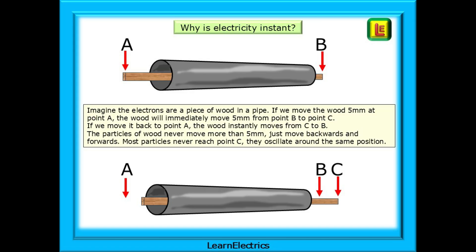How fast is electricity? Why do the lights come on instantly if the electrons hardly move? Imagine the electrons are a piece of wood in a pipe. If we move the wood 5 millimetres at point A, the wood will immediately move 5 millimetres from point B to point C. If we move it back to point A, the wood instantly moves from C to B. The particles of wood never move more than 5 millimetres, just move backwards and forwards. Most particles will never reach point C. They will just oscillate around the same position. But that small movement at point B and C is enough to do valuable work in the load.